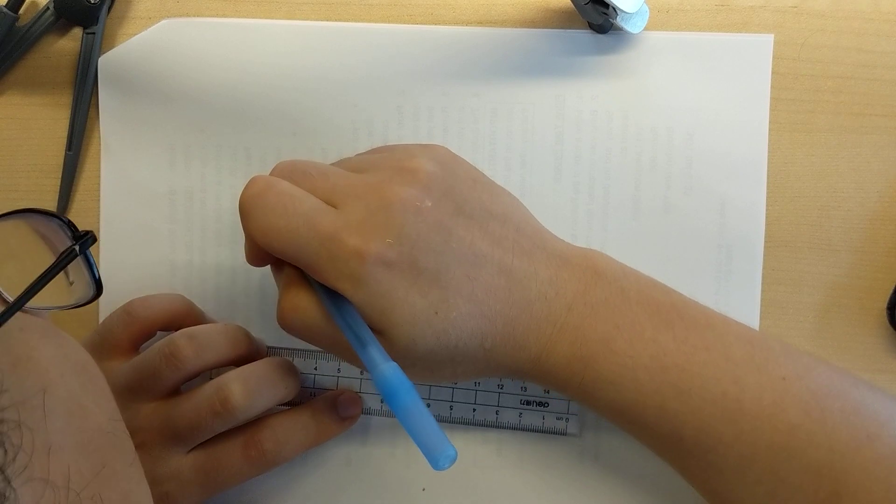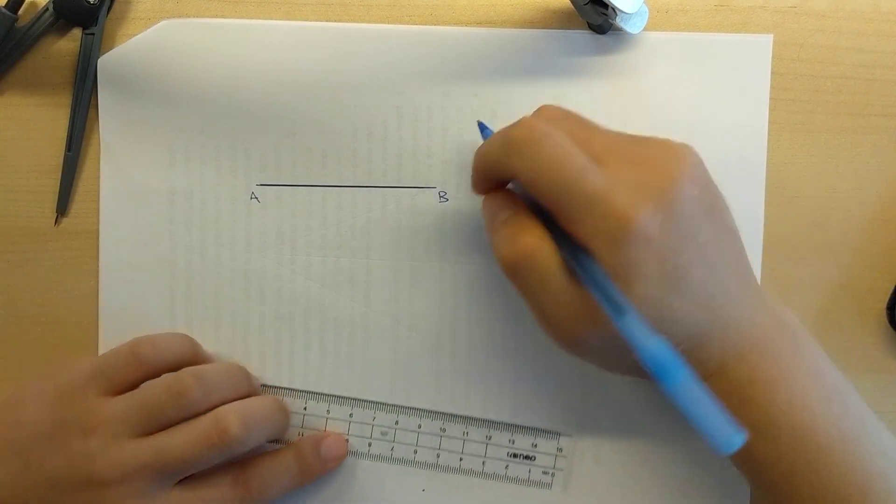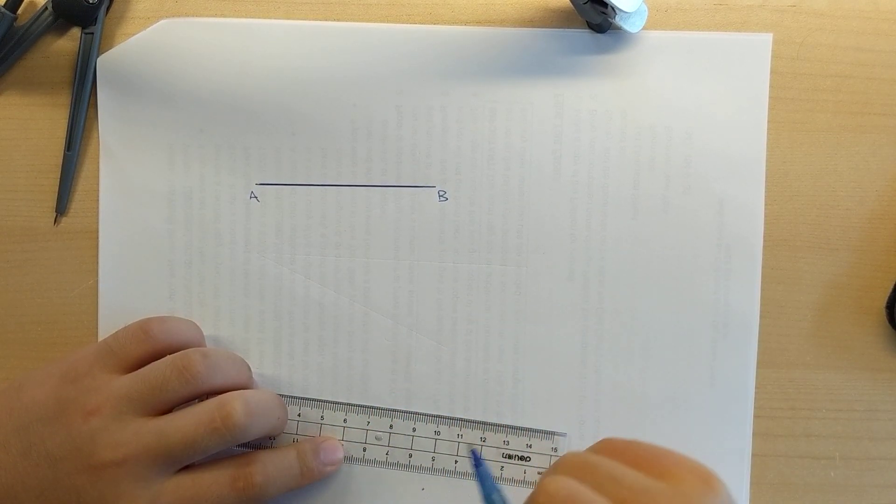And I'm going to label this line as A, B. And what I want to do is I want to copy this line segment somewhere else on a sheet of paper.